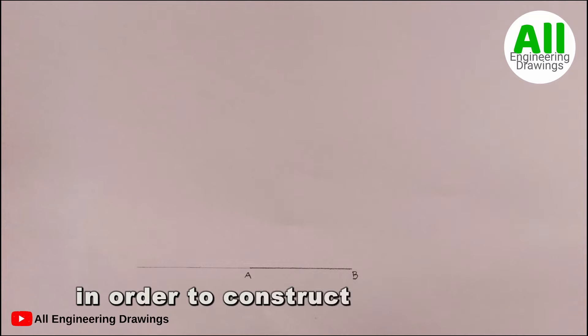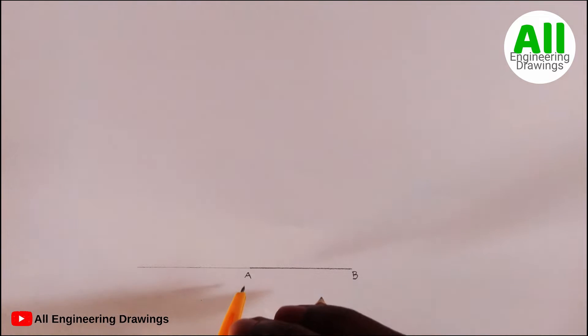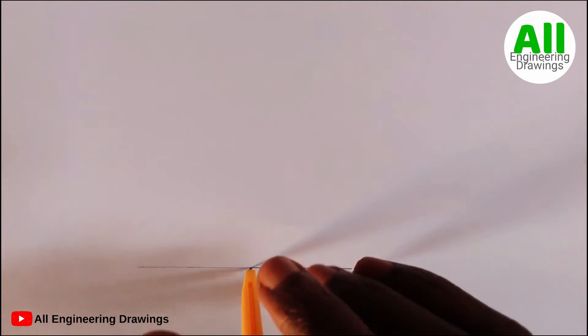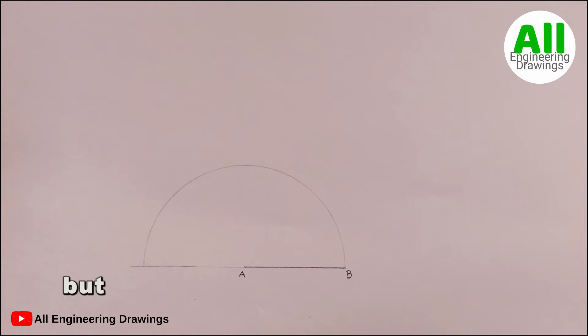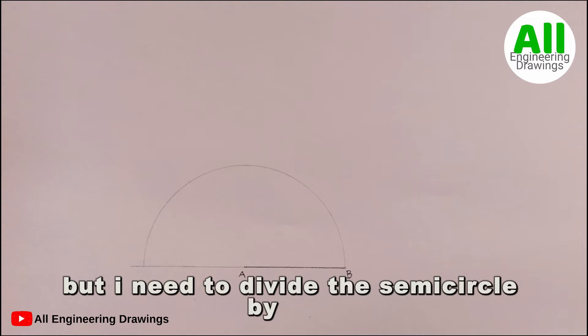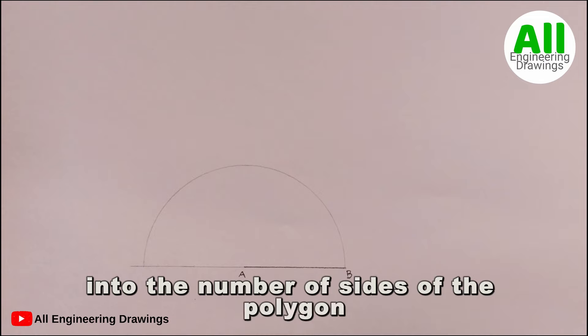In order to construct the polygon, I will draw a semicircle. I need to divide the semicircle by trial into the number of sides of the polygon.